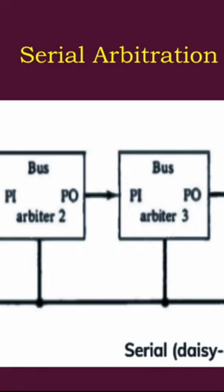Once a device gets control, it will pass it on — if it is necessary, that bus device will be enabled; otherwise it will disable its bus and pass the priority to the next consecutive device. Likewise, priority passes from one device to the other. This is called serial arbitration.